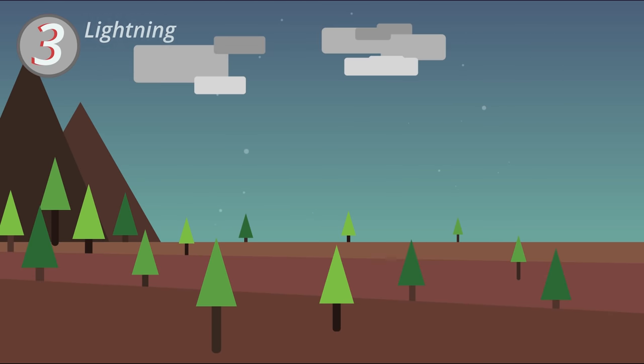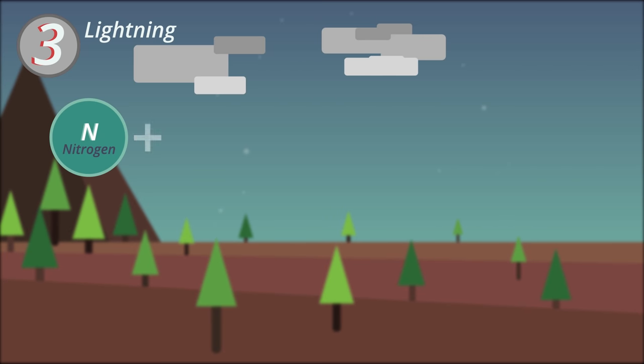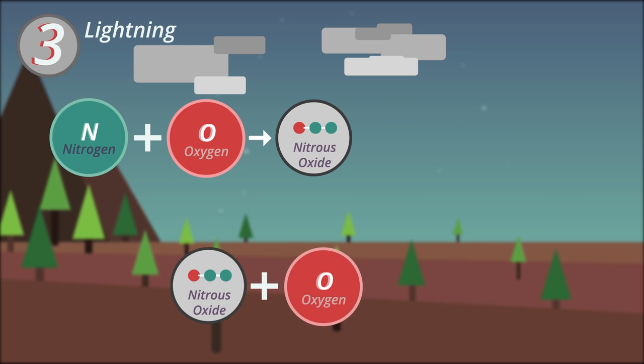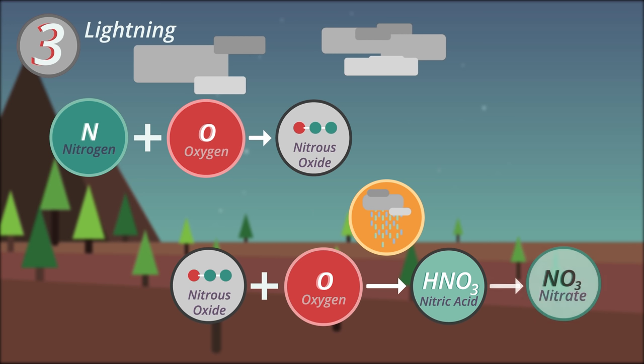Thirdly, lightning can cause chemical reactions in the atmosphere, resulting in nitrogen reacting with oxygen to produce nitrous oxide. The nitrous oxide then reacts with more oxygen and dissolves in rain water to make nitrous acid. This rain water containing nitrous acid increases the amount of nitrate in the soil.